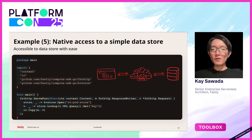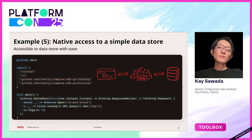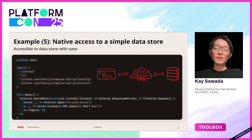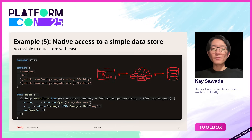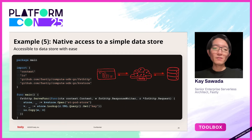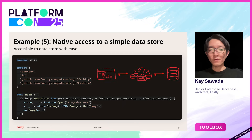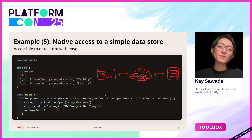This last Fastly Compute example shows the capability of reading data from the edge data store. Each edge computing platform typically has a data store like a key-value store or a configuration store. I'm showing here that with just a few lines of code, you can quickly write data-retrieval code without worrying too much about the infrastructure. That's really cool.